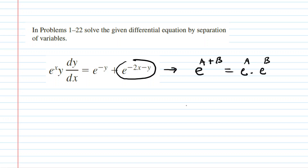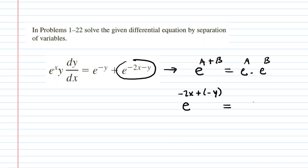So with that property in mind, let's take a look at what we have. We have e to the power of negative 2x plus negative y. Notice what we've done there — instead of writing it as a subtraction of y, we have written it as the addition of a negative y. That, of course, is the same thing. So with that rewrite in mind, we can rewrite this entire expression as e to the power of negative 2x multiplied by e to the negative y.